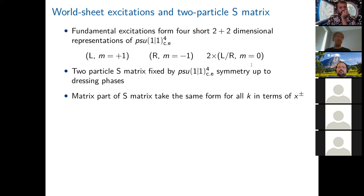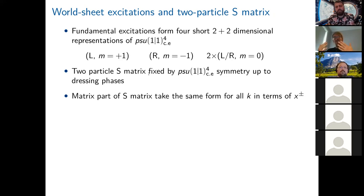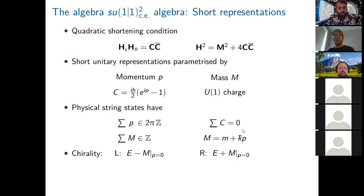The S-matrix between scattering of these representations is fixed by the psu(1|1)⁴ symmetry up to scalar dressing factors, exactly like the dressing phase in AdS5, except now there are several different types of representations. Naively with four representations one might have up to 10 independent dressing functions, but through discrete symmetries such as unitarity — which relates left-right scattering to right-left scattering — one ends up with four independent functions, related by various forms of crossing equations.